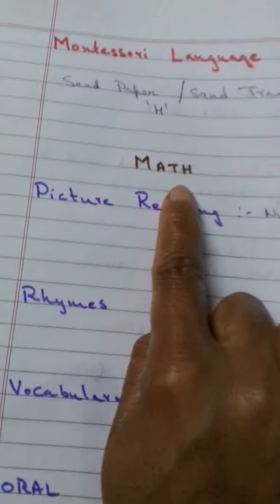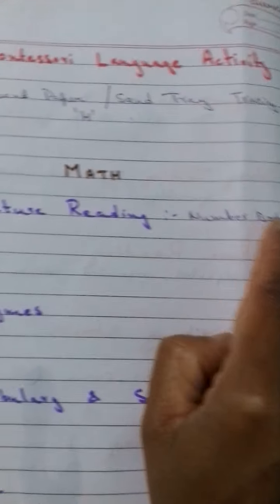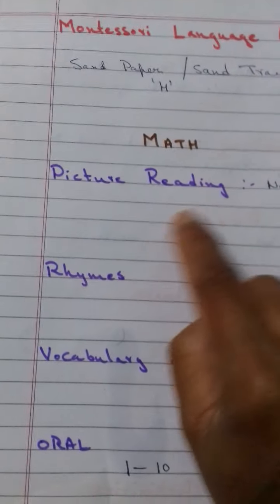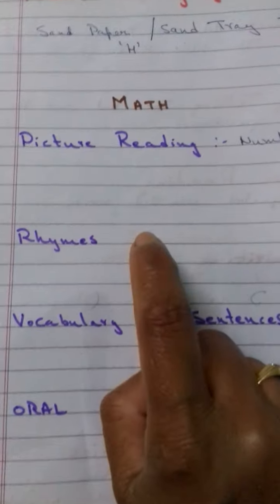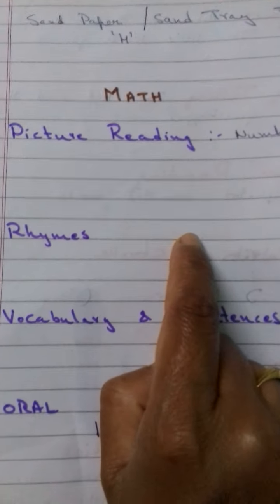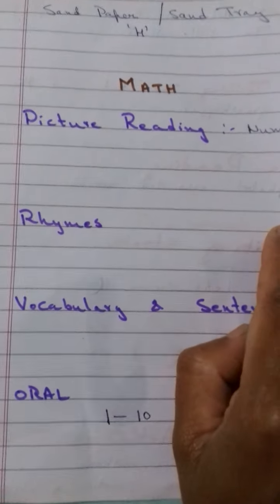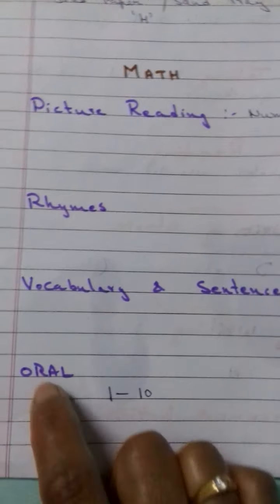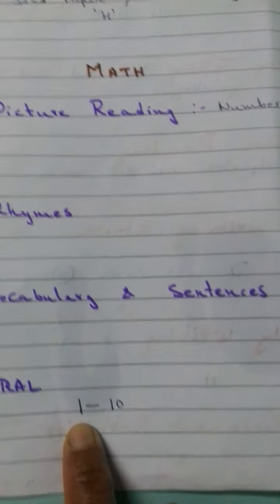Math — picture reading is the number book. Number rhymes — you can do revision of the previous month. Then oral, it is numbers from 1 to 10.